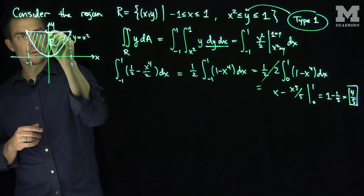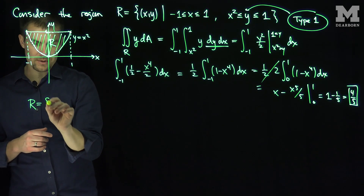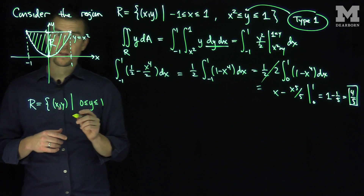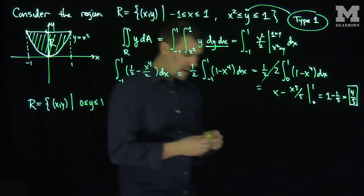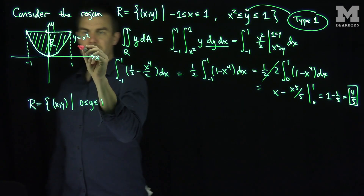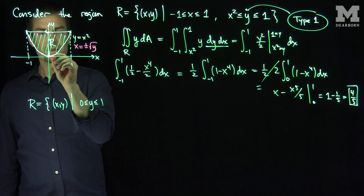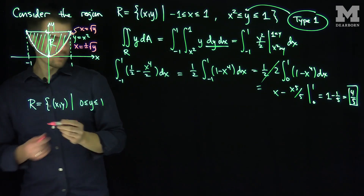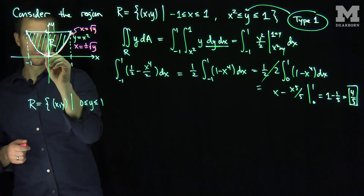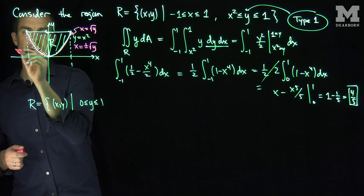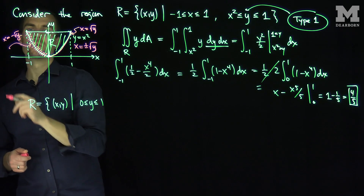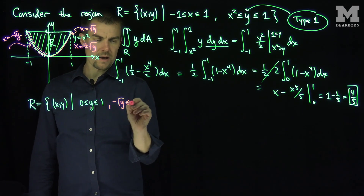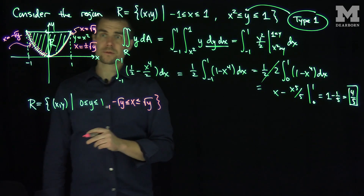In this region, y goes between 0 and 1 — that's the range of y. So R is also the set of points x and y such that y is between 0 and 1. Where does x go? Well, the parabola can be written as two functions of y: x equals plus or minus root y. The branch on the right corresponds to x equal to positive root y, and the other branch corresponds to x equal to negative square root y, because over there x is negative. So x is between negative root y and positive root y — that's an alternate way of writing the region.